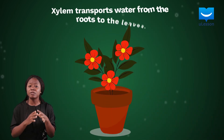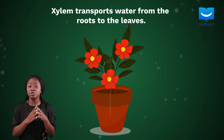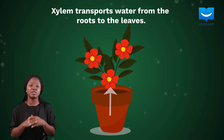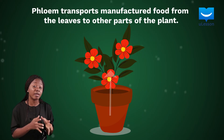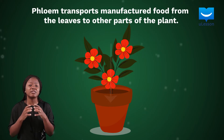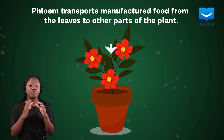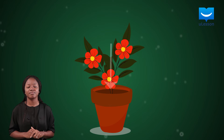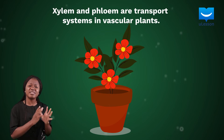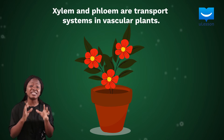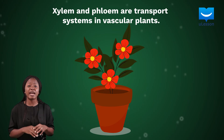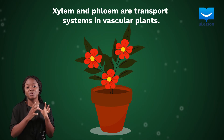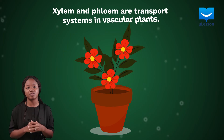The xylem is the part of the plant that transports water from the roots up to the stem and then to the leaves. While the phloem can be described as the part that moves manufactured food from the leaves to other parts of the plant. While the xylem and phloem are not necessarily parts of the leaf, they are important parts of the plant as a whole because they are the two types of transport systems found in vascular plants.